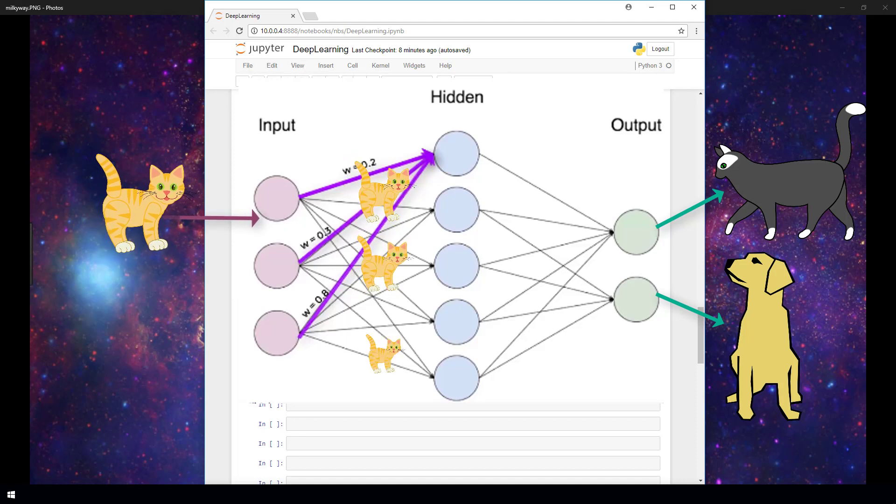Once the image passes through the entire network, the model is going to spit out an output at the end. This will consist of what it thinks that the image is, either a cat or a dog. It will actually consist of probabilities for cat or dog. So it may assign a 75% probability to the image being a cat and a 25% probability to the image being a dog. Meaning that the model assigns a higher likelihood to the image being a cat rather than a dog.